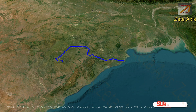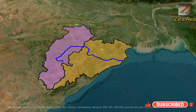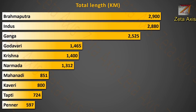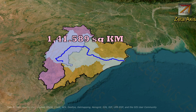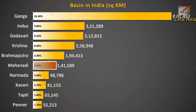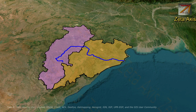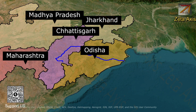The Mahanadi River originates in the Eastern Ghats in Chhattisgarh and then flows into Odisha. It covers a total length of 851 km, making Mahanadi the seventh largest river in India. The Mahanadi River Basin is around 141,589 sq km, approximately 4.3% of the total geographical area of India, making it the sixth largest river basin in India. The river basin mainly includes Chhattisgarh and Odisha, with very small portions of Jharkhand, Maharashtra, and Madhya Pradesh.